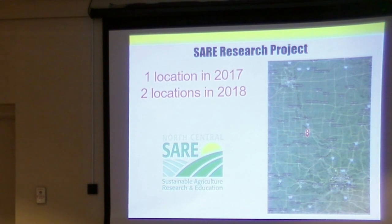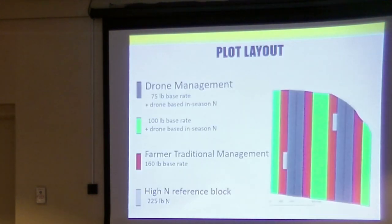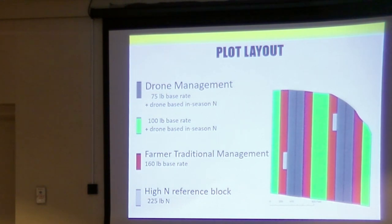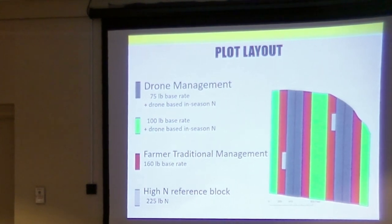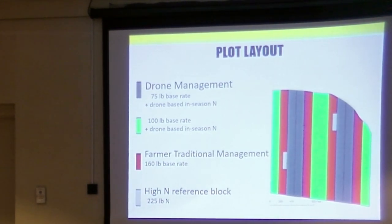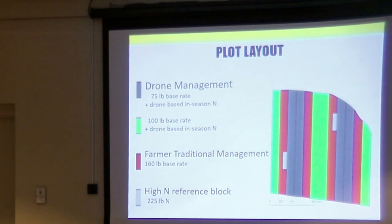For our first 2017 location, we had four base rate strips: two drone-managed rates at 75 and 100 pounds of anhydrous ammonia, the traditional farmer-managed rate at 160 pounds base, and two high-end reference blocks at 225 pounds. The plot was about 90 acres total, with each reference block about 300 feet wide and a couple of acres, and about 30 acres each for each treatment strip.